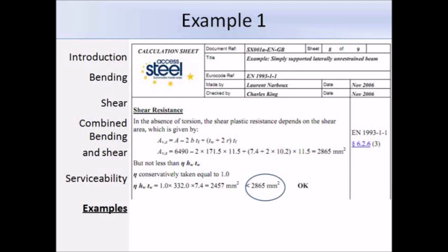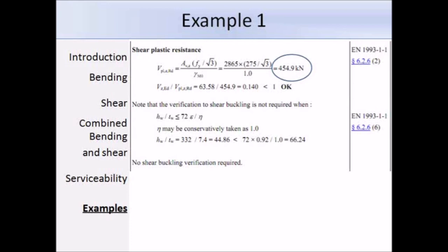Now that we have the shear area, we can go on to work out the shear plastic resistance. We use this expression, and it's equation 6.18 in Eurocode 3. We have already got the shear area, the yield strength, and the partial factor gamma-M0 is equal to 1. Just putting in those values, we get a shear plastic resistance of 454.9 kN, and that is greater than the design shear force. So, the shear plastic resistance is okay.